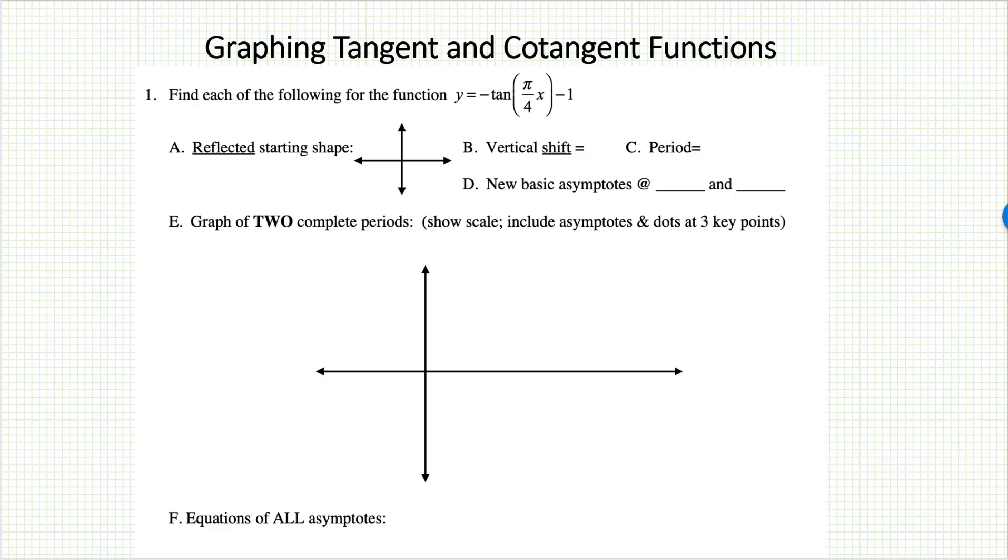Let's take a look at this first example: y equals negative tangent pi over 4x minus 1. We have our regular tangent shape, but that negative in the front would create a reflected tangent shape. In other words, the regular tangent shape would flip across the x-axis, resulting in a picture looking like this.